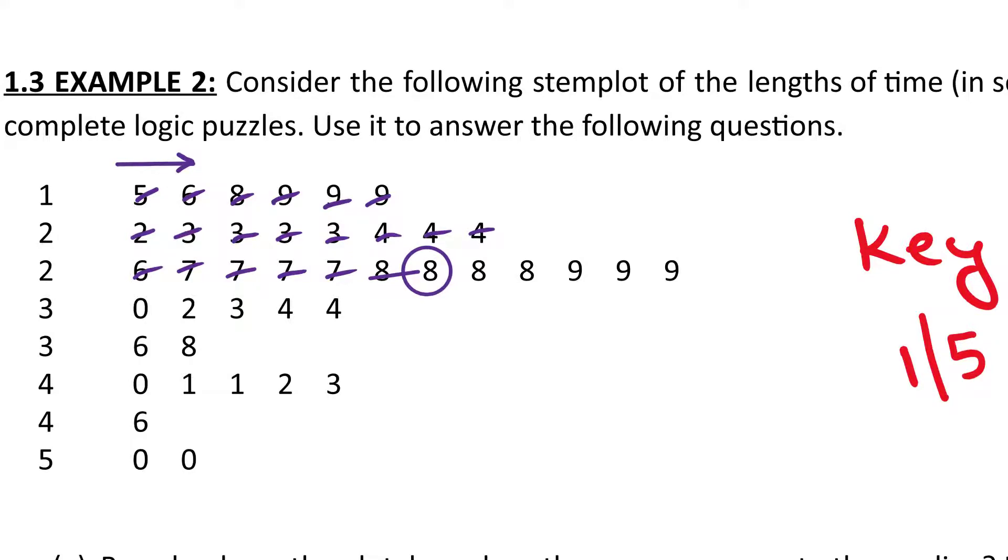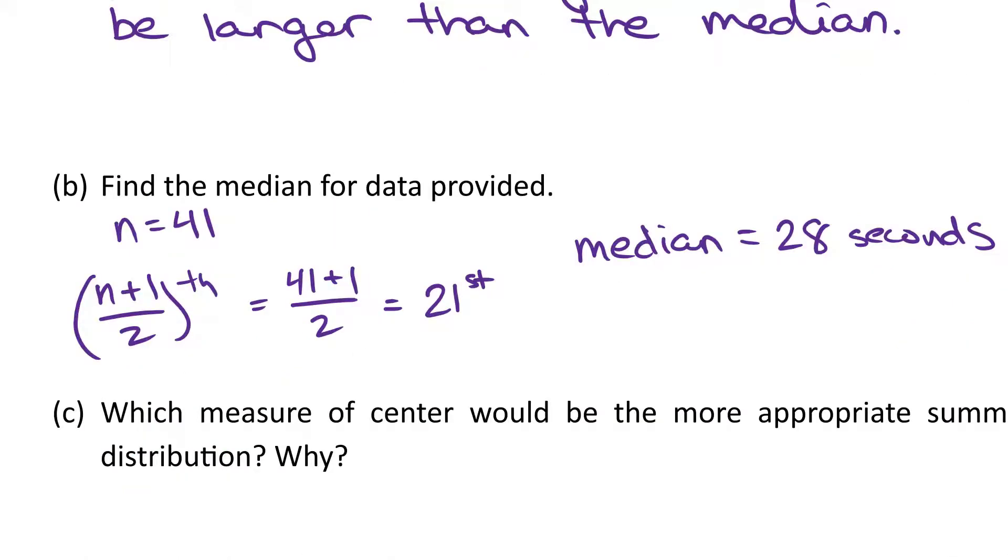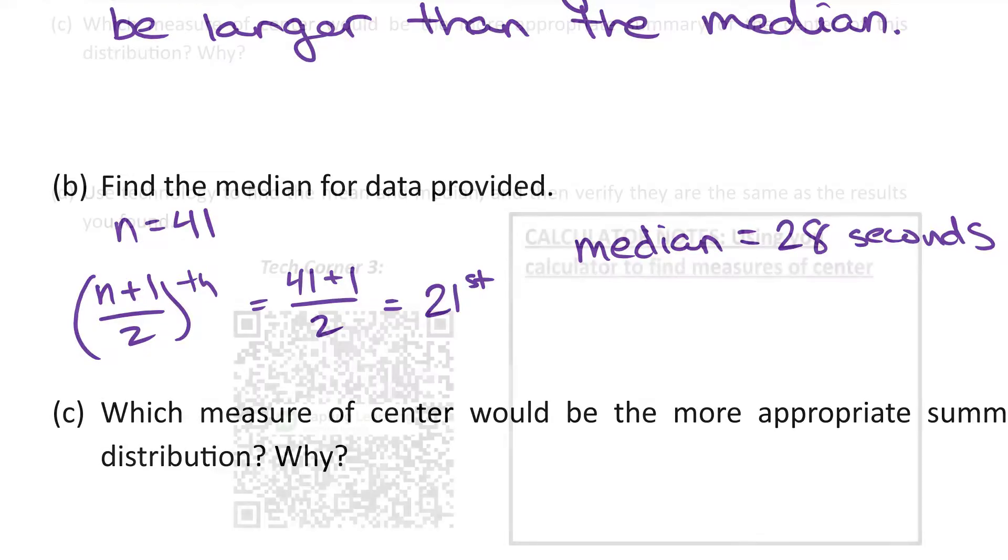Or instead if you wanted to start from the highest or the maximum you're going to work your way in. So 1, 2, 3, and then you're going to go on the extreme to the right, working your way into the center. 4, 5, 6, 7, 8, 9, 10, 11, 12, 13, 14, 15, 16, 17, 18, 19, 20. And again we get 28. So our median is 28 seconds. Just make sure to add that to your part B that your median is 28 seconds.